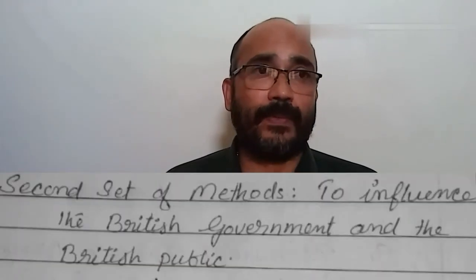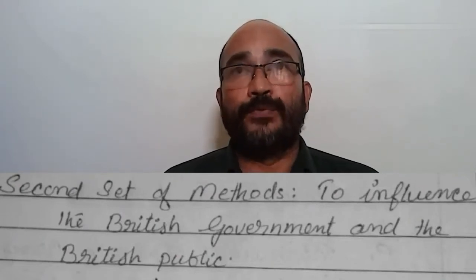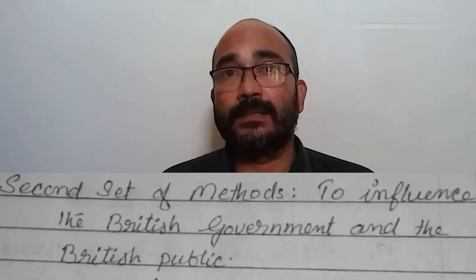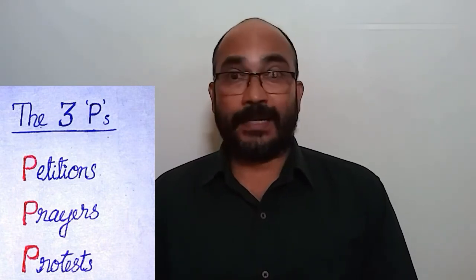The second set of methods was meant for influencing the British government and the British public. In order to do so, they adopted the three Ps — prayers, petitions, and protests. Since all three words start with the letter P, the method was termed the three Ps.